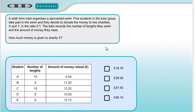Question 1. A sixth form tutor organises a sponsored swim. There are five students in the group taking part and they're going to donate money to two charities, X and Y, in the ratio 2 to 1. The tutor records the number of lengths they swim and the amount of money they raise. The question is: how much money is given to charity X?